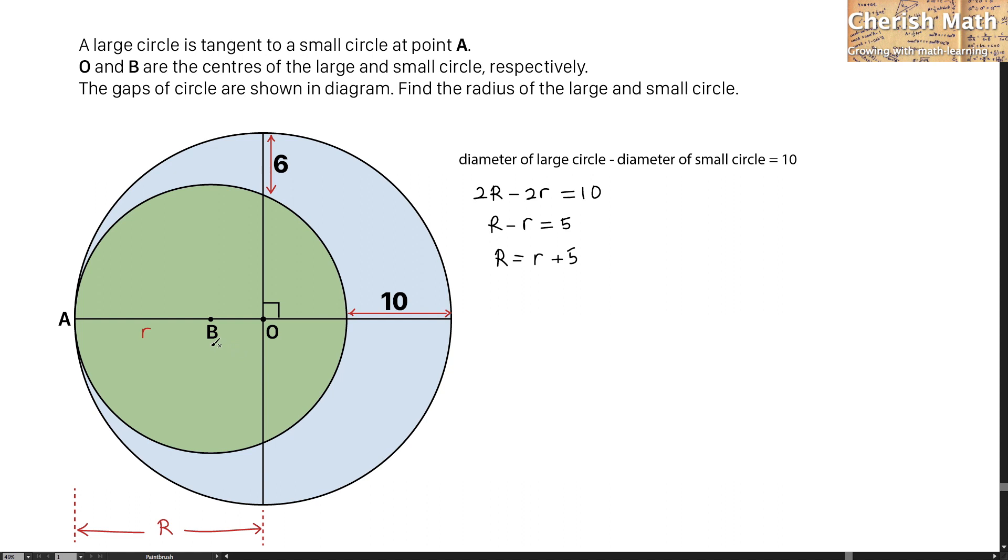I'm going to work out what is the distance of BO by using this AO, which is capital R, minus AB, which is r. This is the distance.